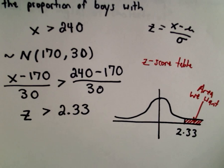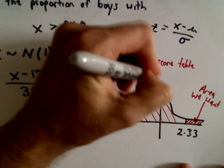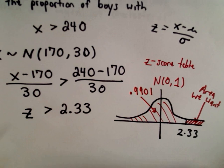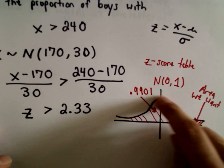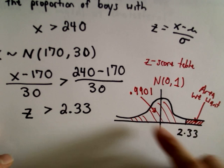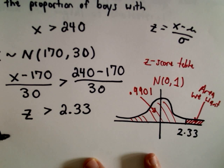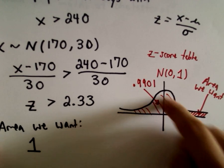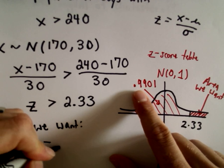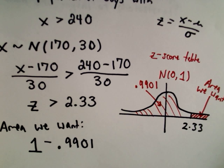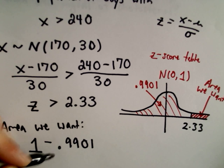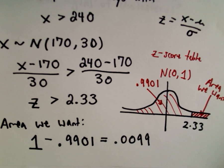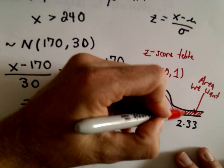This area to the left underneath my normal distribution with a mean of 0 and standard deviation of 1, that area is going to be 0.9901. The idea is we know that the area underneath the standard normal curve is exactly equal to 1. So the area that we want, we know the area under the entire curve is 1, and we subtract away the area to the left, which is 0.9901. If we do 1 minus 0.9901, that's going to give us 0.0099.